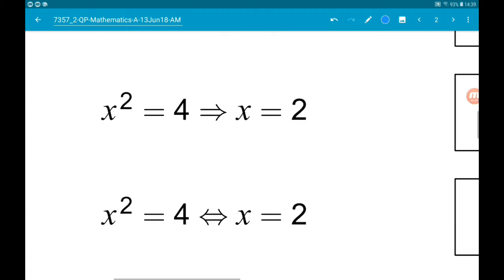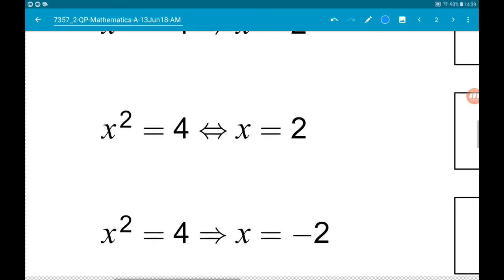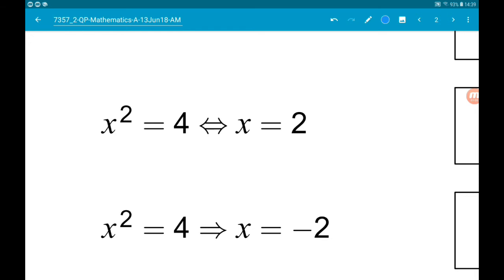So that's why that one doesn't work. Coming up, x squared equals 4 is equivalent to saying x is equal to 2. Again, no, that's not true because x could be minus 2. So it does work from right to left. If x is 2, x squared has to be 4, but it doesn't work from left to right. x squared being 4 does not mean x has to be 2.